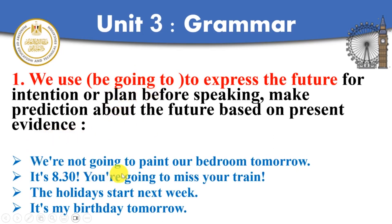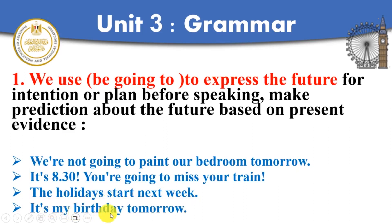We are not going to paint our bedroom tomorrow — this is the intention, a plan or decision. It's 8:30 and you are going to miss the train — this is prediction with evidence. The holidays start next week. It's my birthday tomorrow, I am going to decorate the apartment, I am going to make a party. So be going to is used for plans, decisions, intentions, and prediction with evidence.